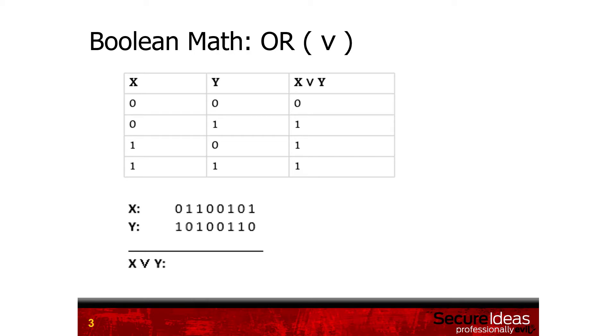The first thing you do when you have a Boolean math problem like this is look to see what operation we're using. Because we're using that V symbol, this tells us we're dealing with the OR logic.